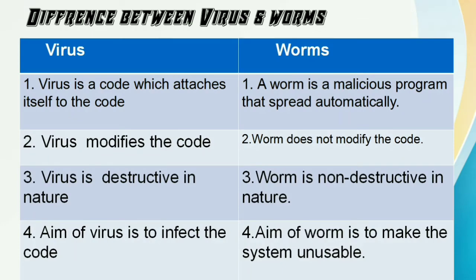Difference between viruses and worms: A virus is a code which attaches itself to other code, while a worm is a malicious program that spreads automatically. A virus modifies the code; a worm does not modify the code. A virus is destructive in nature; a worm is not destructive in nature. The aim of a virus is to infect the code, while the aim of a worm is to make the system unusable.